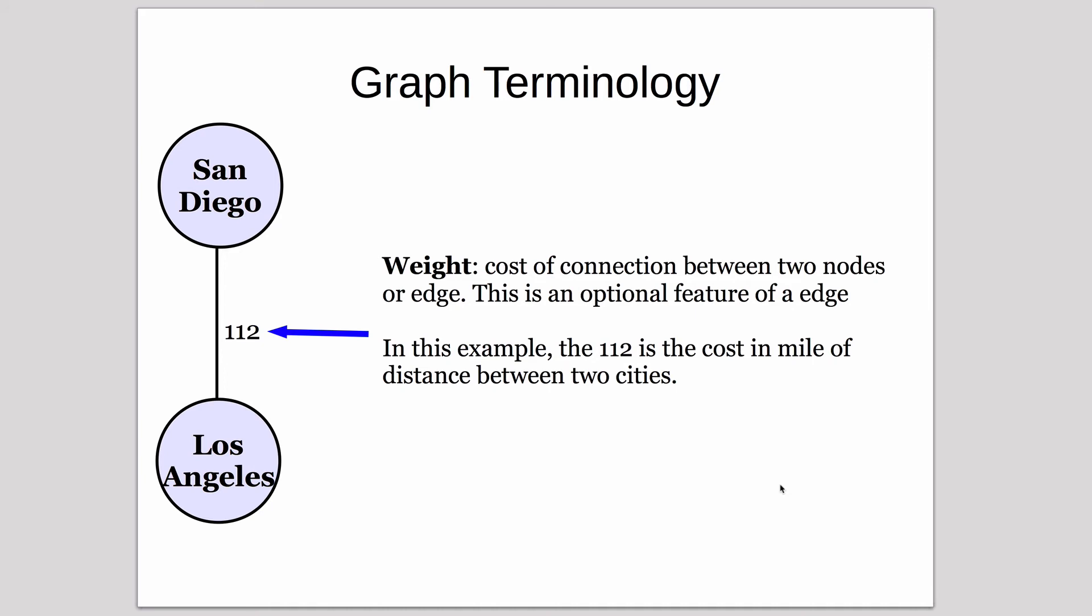Optionally, on an edge you can have a weight, which is the cost of that connection. For example, if you're traveling by plane, that might be the number of miles you have to travel to get between two cities. In this case, the nodes of the graph could be cities, the connection means there's an airplane route, and the weight is how many miles that route is. The weight could be different things, like how long the flight takes.